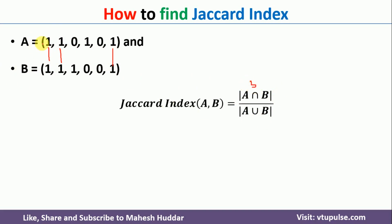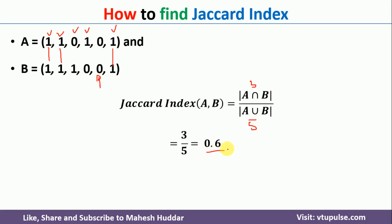For the union, we include elements present in either A or B. Going through the data points, some are present in A, some in B, and the zeros indicate elements not available. Counting all distinct elements in A union B gives 5. So the Jaccard index is 3 divided by 5, which equals 0.6.